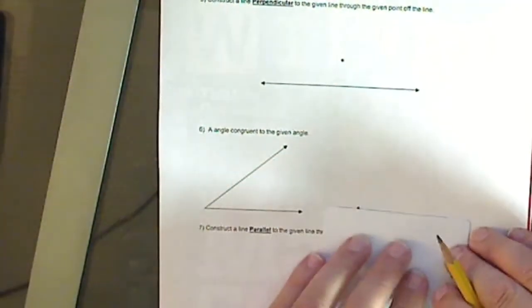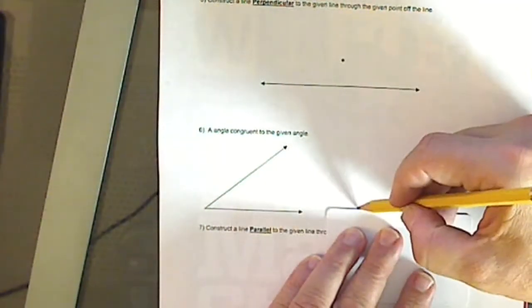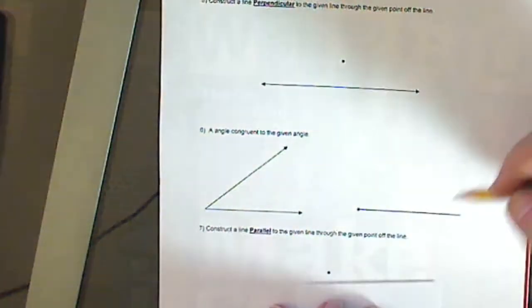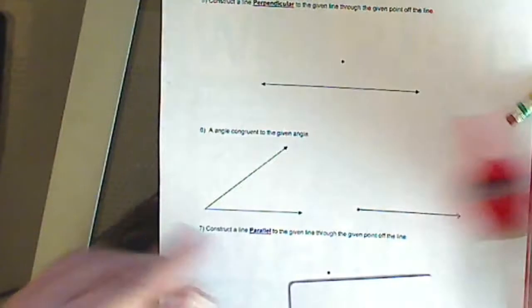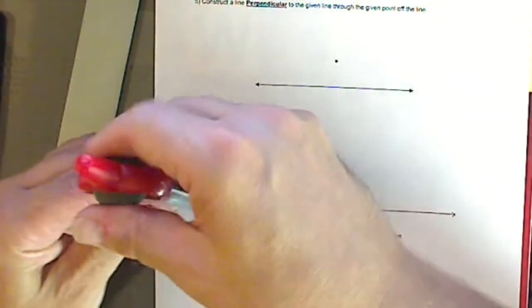We have a ray leaving that point. Done. Now, we want to copy the same amount of inclination.